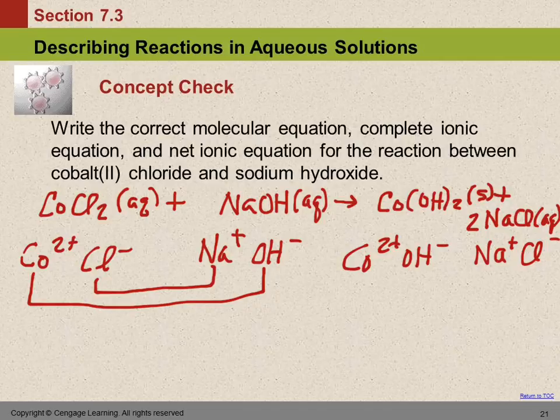So we'll put a 2 in front of sodium hydroxide, so that we have two sodiums on each side. Now, we can balance that hydroxide as a unit, because it didn't come apart. We have hydroxide in the reactants and hydroxide in the products. We have two hydroxides on the left side and two on the right.